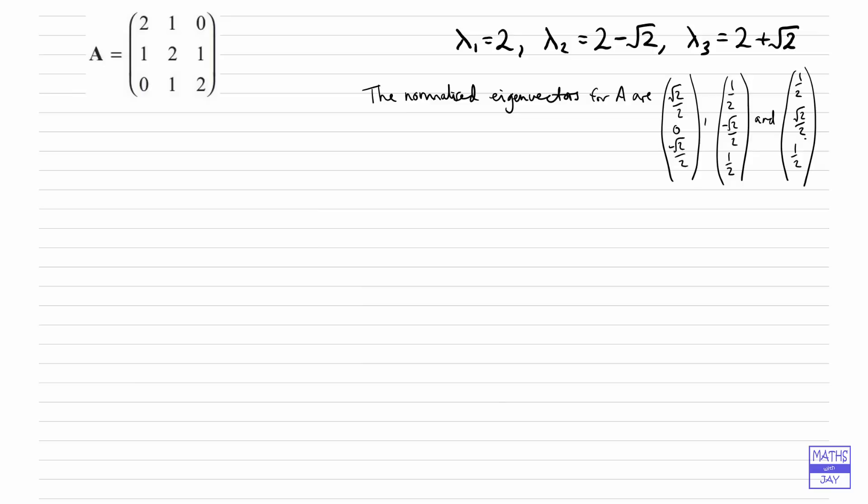So let's write down our matrix P. This consists of the eigenvectors written as a 3x3 matrix. Now because all of them have got halves, well apart from the 0, we could take the half outside. So the first one would be root 2, 0, minus root 2, minus root 2.